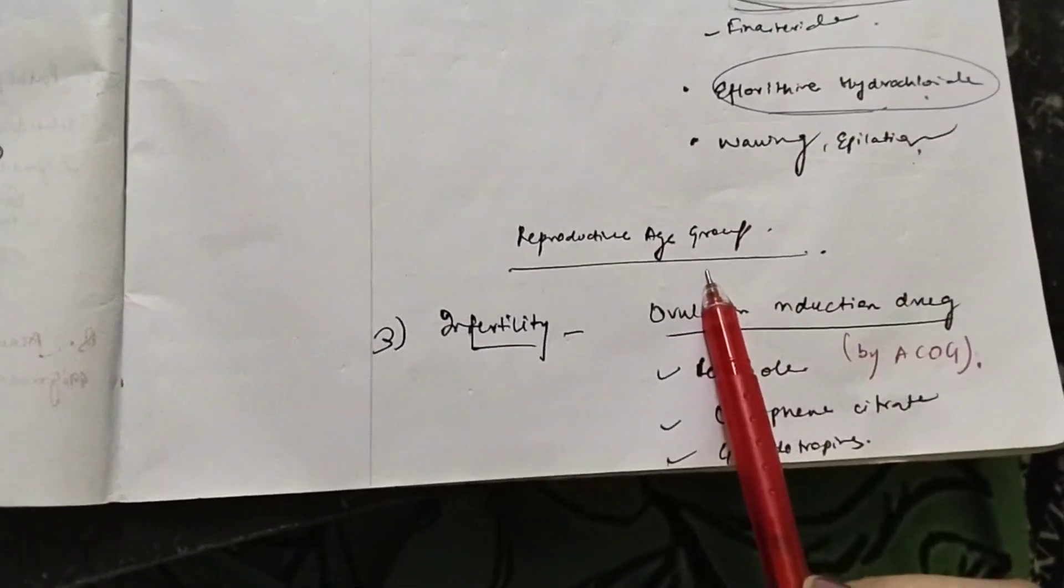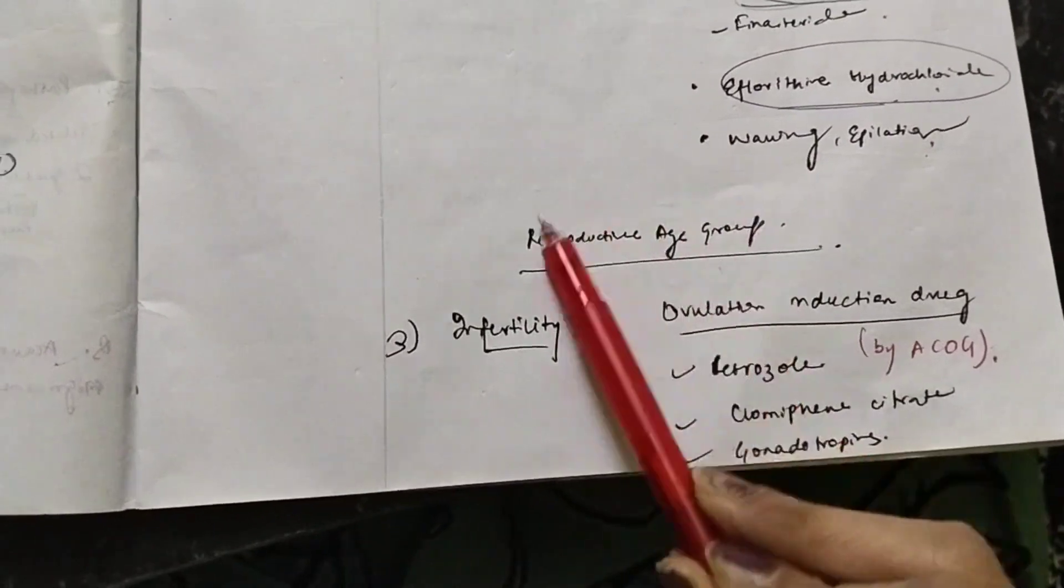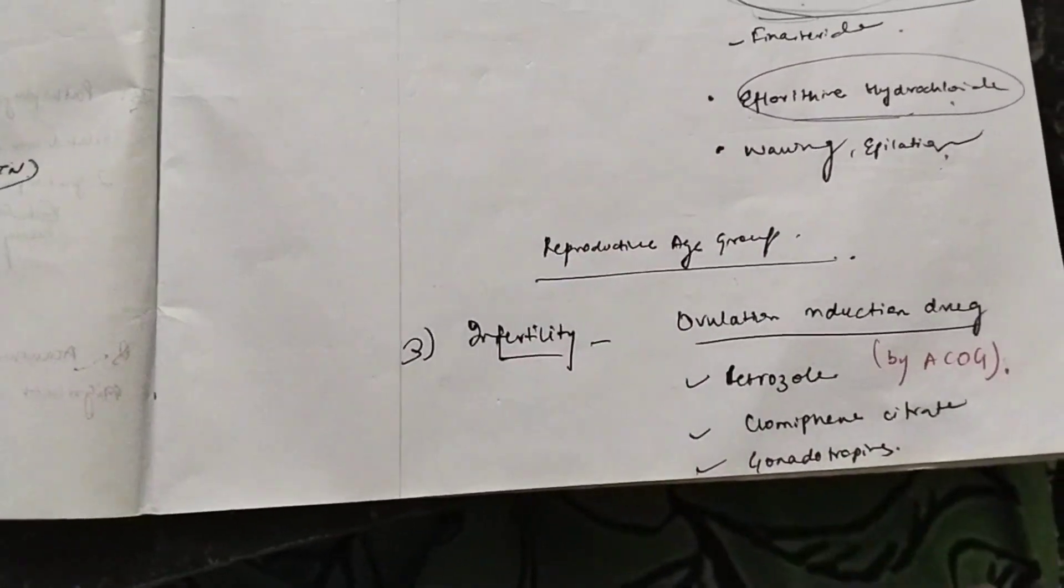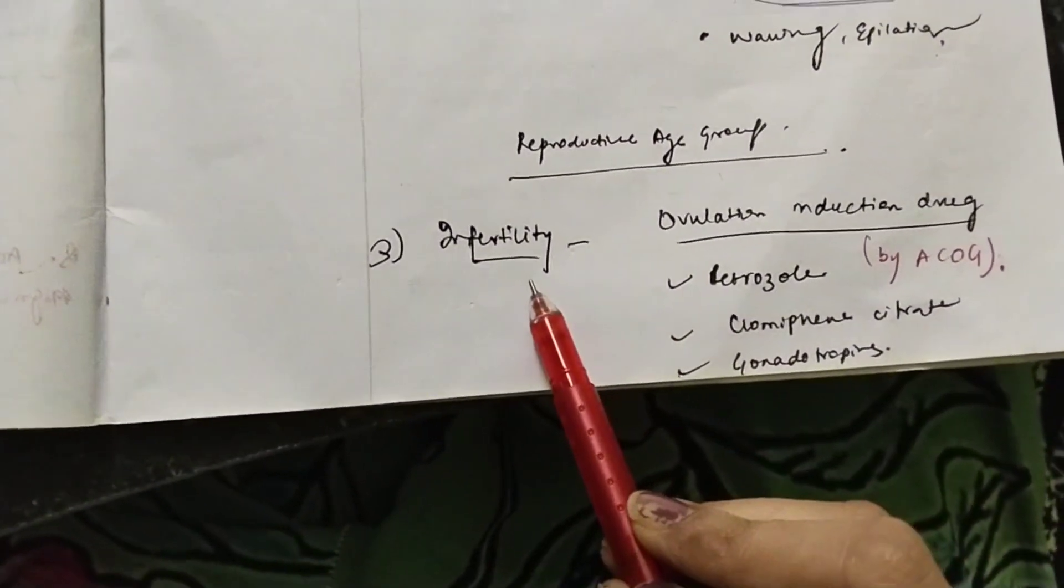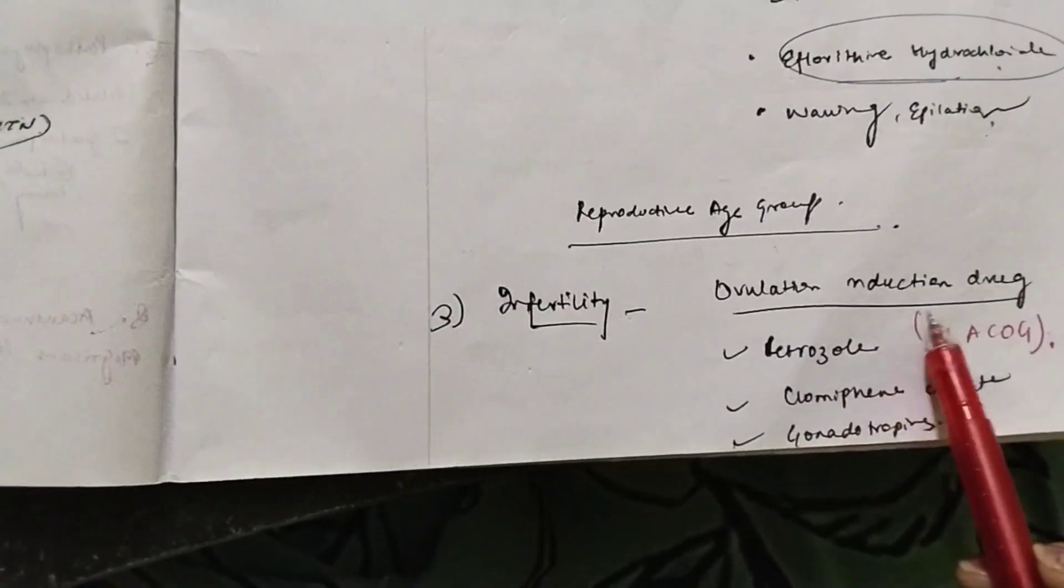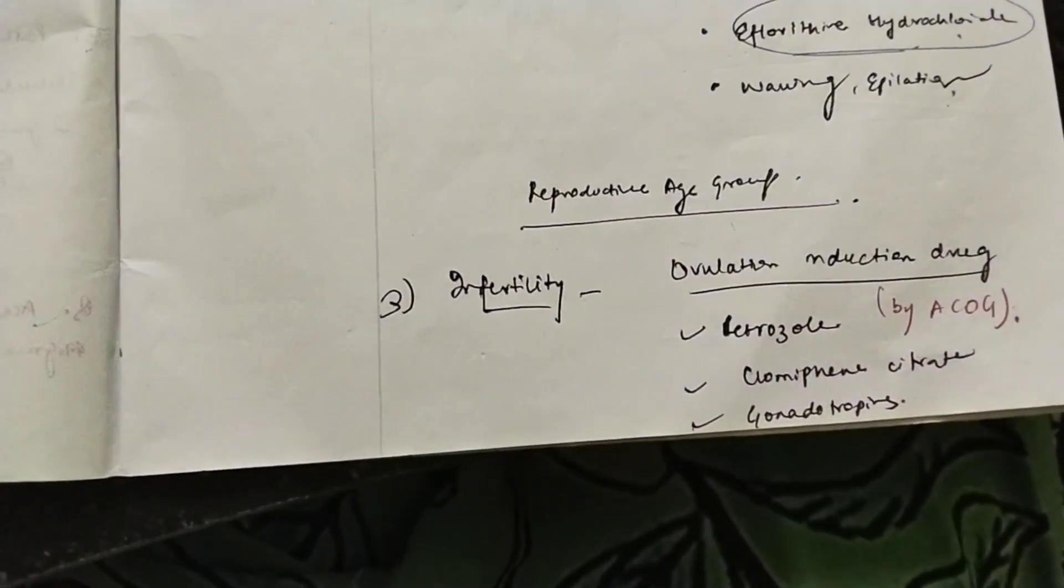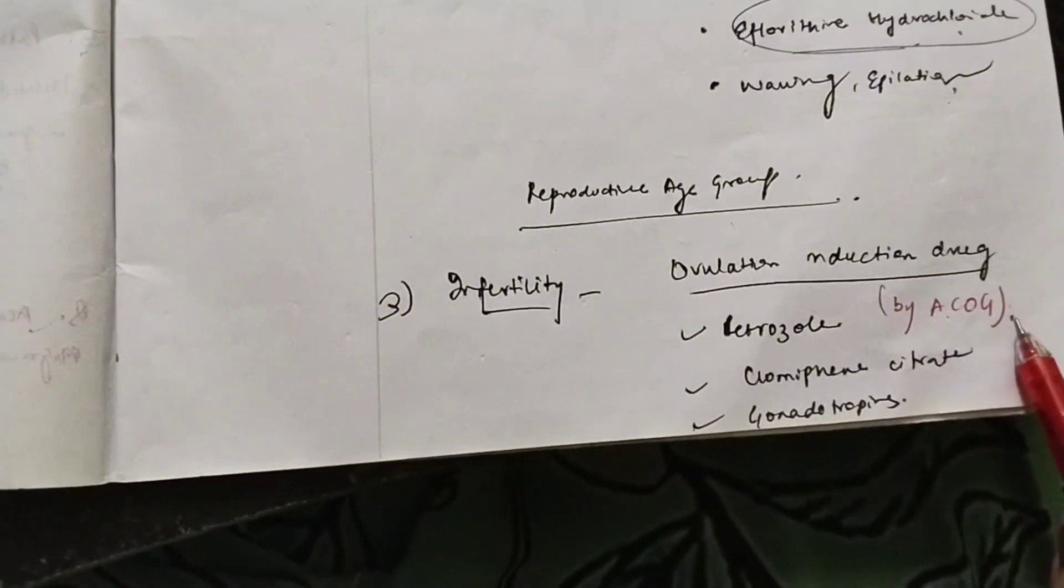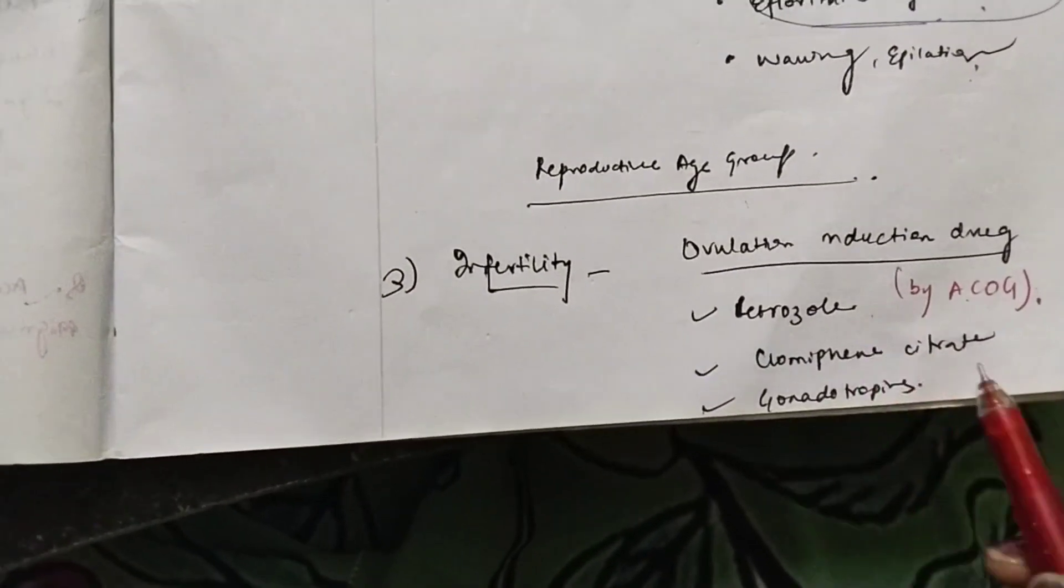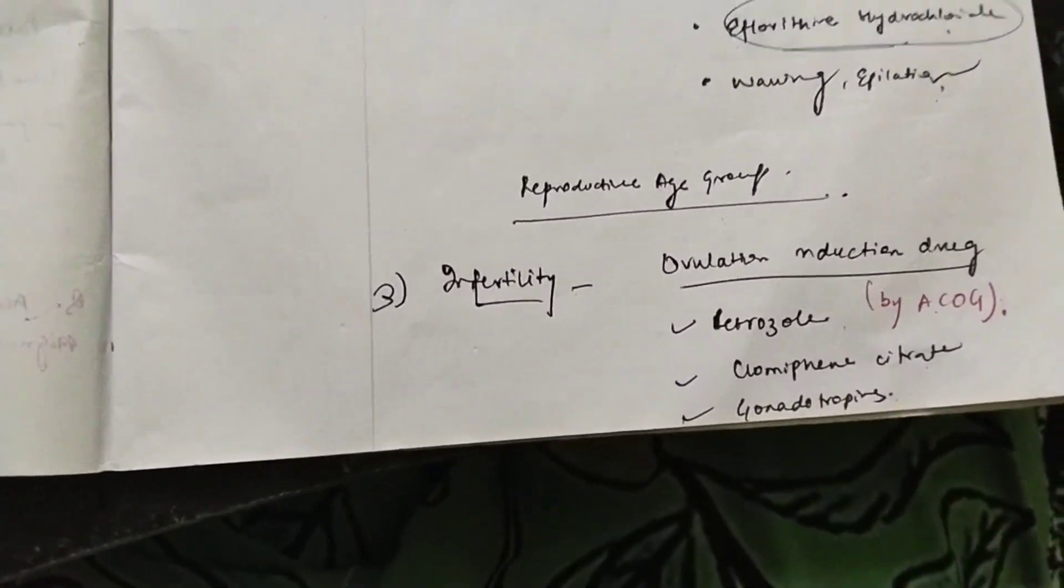What will be the reproductive age group treatment? Mainly we are concerned that these people can have infertility problems because there is anovulation or oligo-ovulation. So infertility has to be targeted. For that you have to give the ovulation induction drug because you want the egg to be formed. According to American College of Obstetrics and Gynecologists, you can give letrozole, clomiphene citrate and gonadotropins.